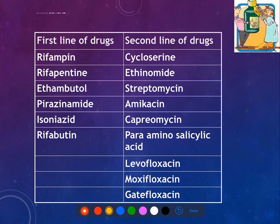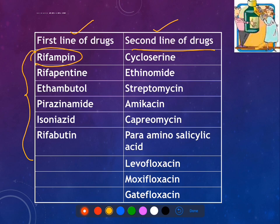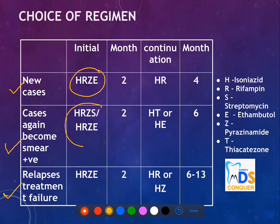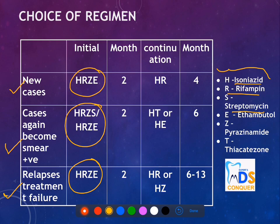For treatment, there are two lines of drugs: first line and second line. The most commonly used first-line drug is rifampicin. A multi-drug regimen is used in tuberculosis for new cases, smear-positive cases, and relapses or treatment failures. The drug shortcuts are: H = isoniazid, R = rifampicin, S = streptomycin, E = ethambutol, Z = pyrazinamide, and T = thioacetazone.